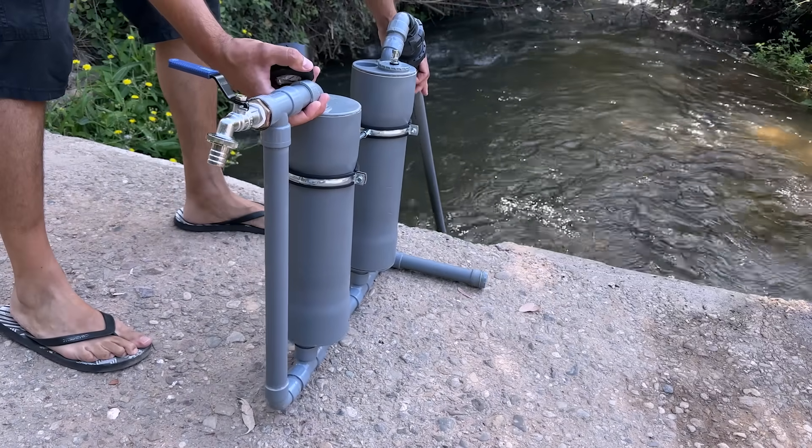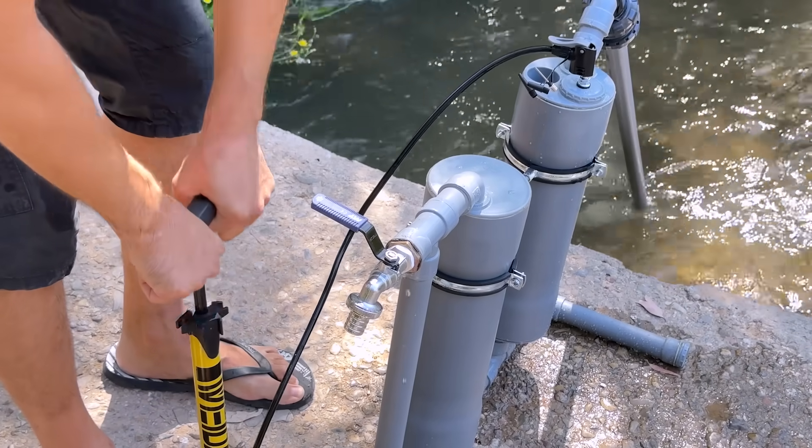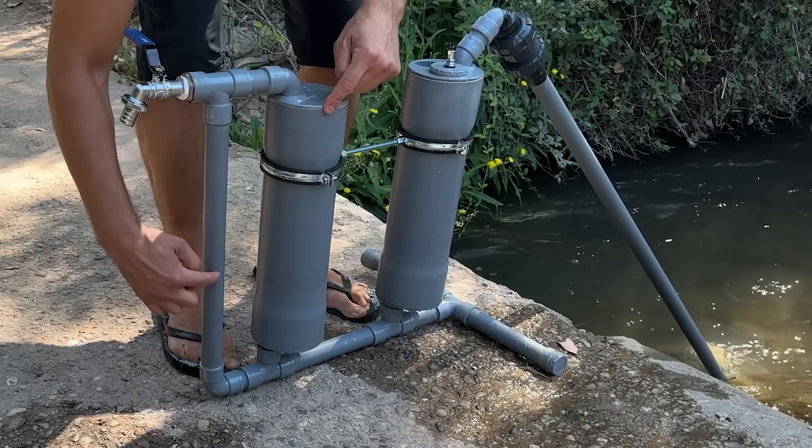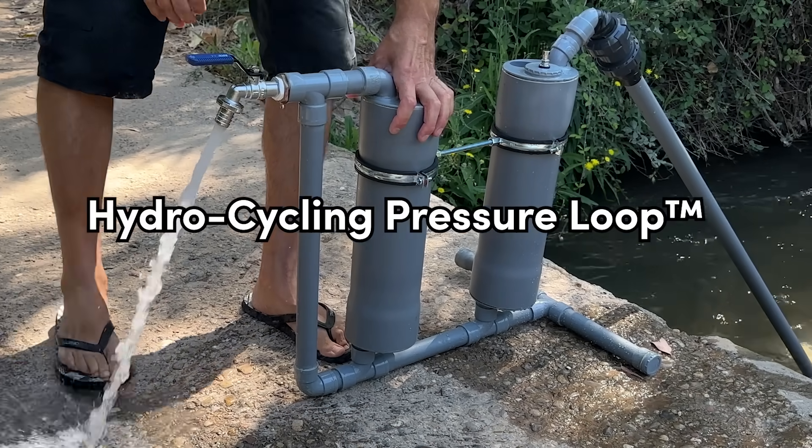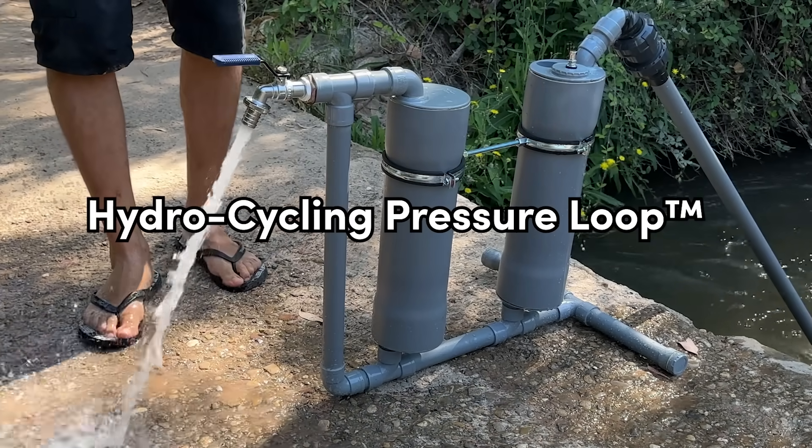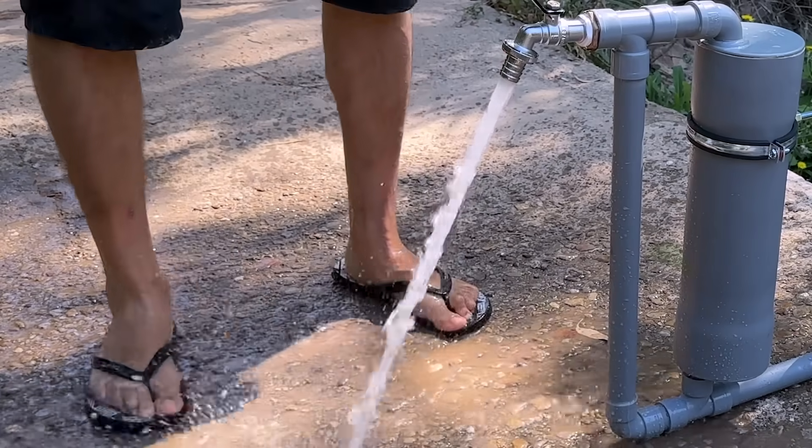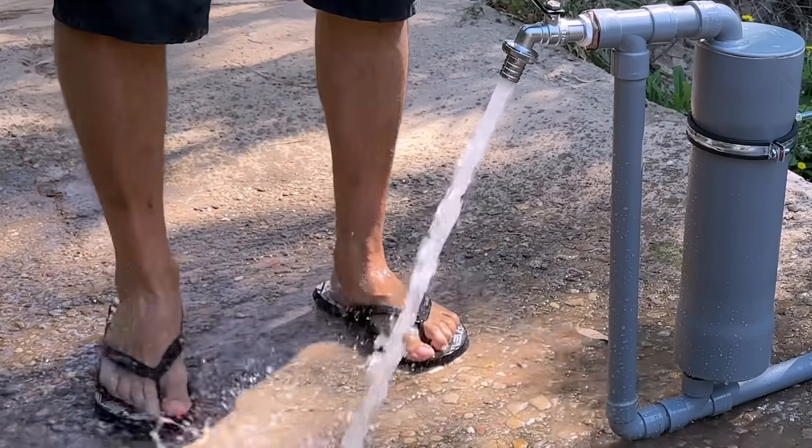In a global context where access to water and energy efficiency are more necessary than ever, a concept is born that challenges traditional solutions. Introducing the Hydrocycling Pressure Loop, a self-sustaining hydraulic pumping system that leverages physics in an intelligent and surprising way.